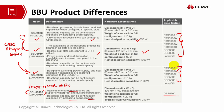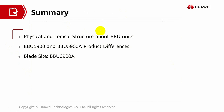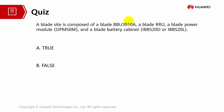That's all from me. Let's go through the summary of part 2. We have discussed the physical and logical structure of BBU units, learned about BBU 5900 series and BBU 5900 series A blade site product differences, and learned about blade site BBU 3900 series A. There is a quiz question: a blade site is composed of a blade BBU 3910, a blade RRU, a blade power module, and a blade battery cabinet — true or false? The answer is true. Thank you so much, have a nice day.